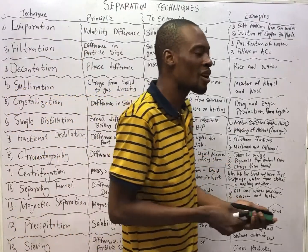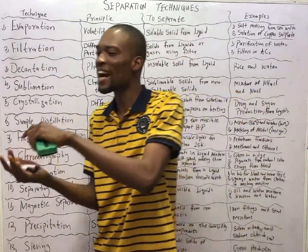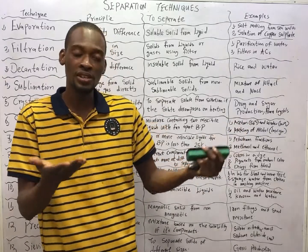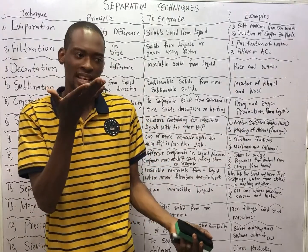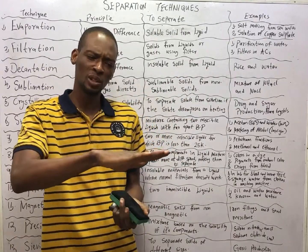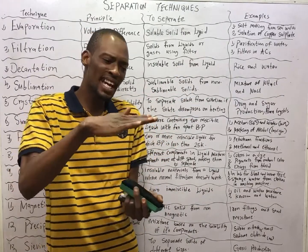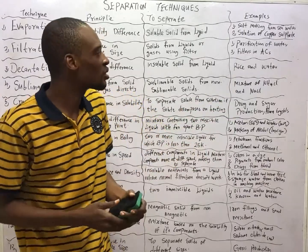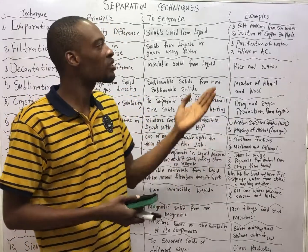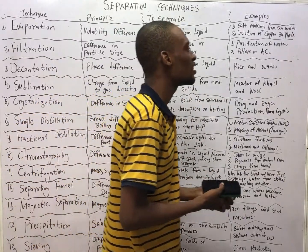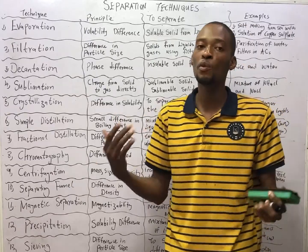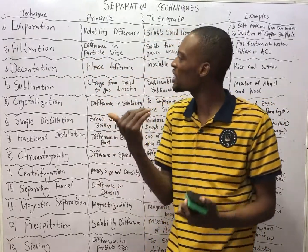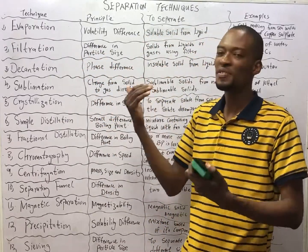Now, if you are still interested in the water, you can condense the water. Condensation is the process whereby gas goes back to liquid. For example, in your kettle when you are boiling water, you see water vapour coming up — put your hand on top, you see gas entering your hand at first, but with time it turns to drops of water. Examples of evaporation: salt from sea water, solution of copper sulfate — it doesn't decompose, so you can separate it from water. Evaporation works on the principle of volatility difference.